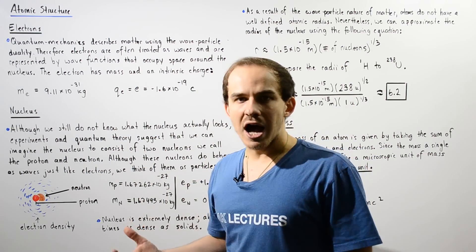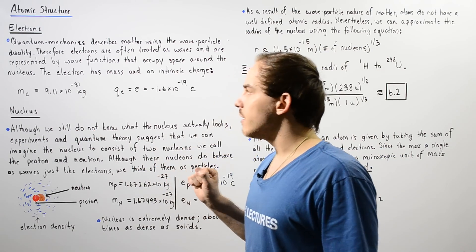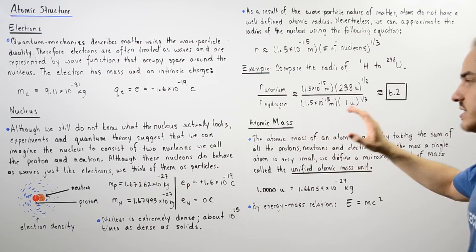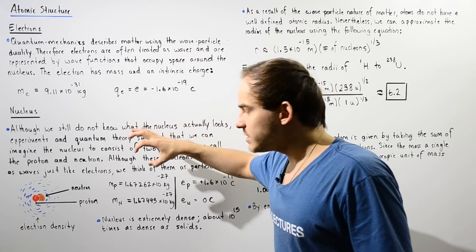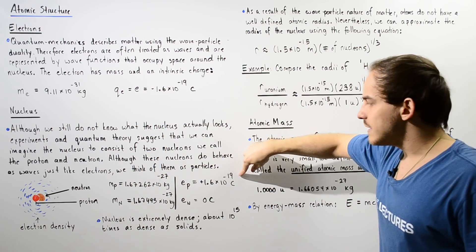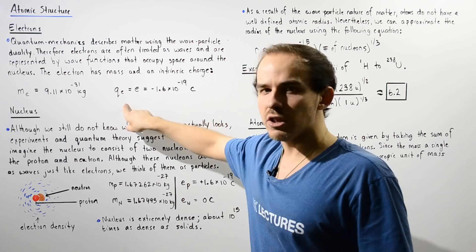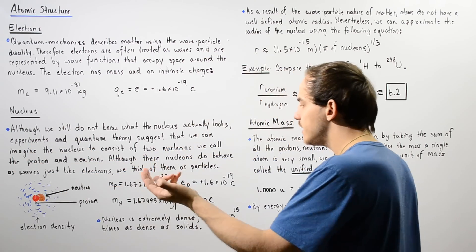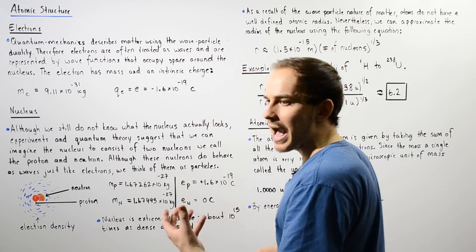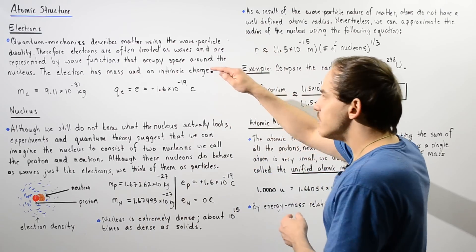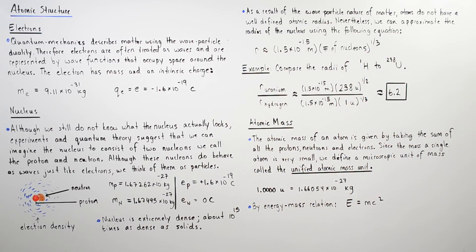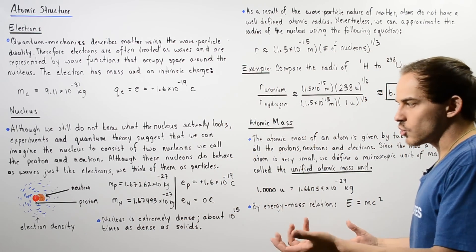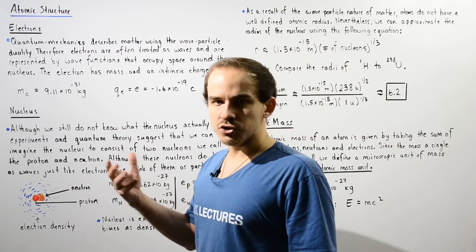That's exactly why we usually neglect the mass of the electron when we're calculating the atomic mass, as we'll see in just a moment. Our proton also has a charge, and the quantity of charge is equal to that of the electron but opposite in sign. We define the electron to have a negative charge and the proton to have a positive charge — this was chosen completely arbitrarily. The charge of the neutron is zero, and that's exactly why we call it a neutron, because it has a neutral charge.